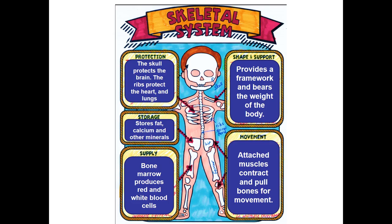The skeletal system also stores things like fat, calcium, and minerals. Your bone marrow produces your red and white blood cells — that's where they're made. We talked about shape and support, and then movement, because your skeletal muscles are attached to these bones and move them — that's how you're able to write your notes or walk to your next class.